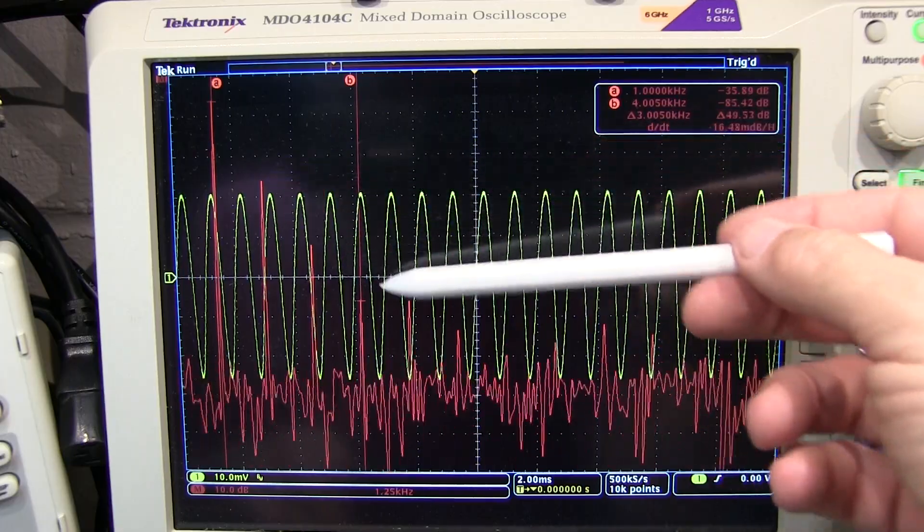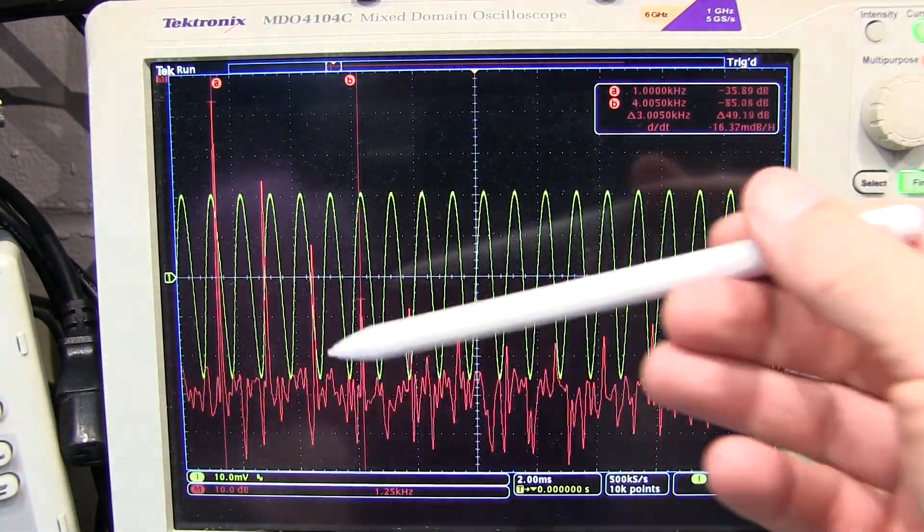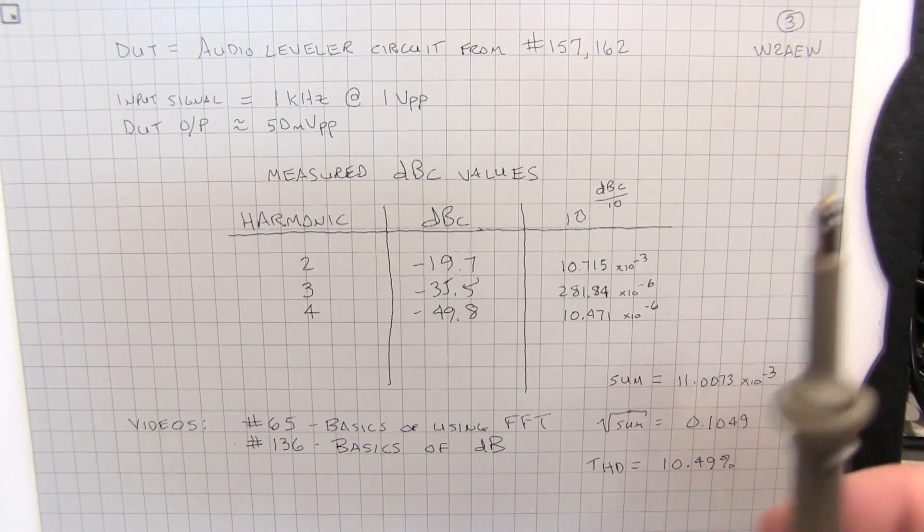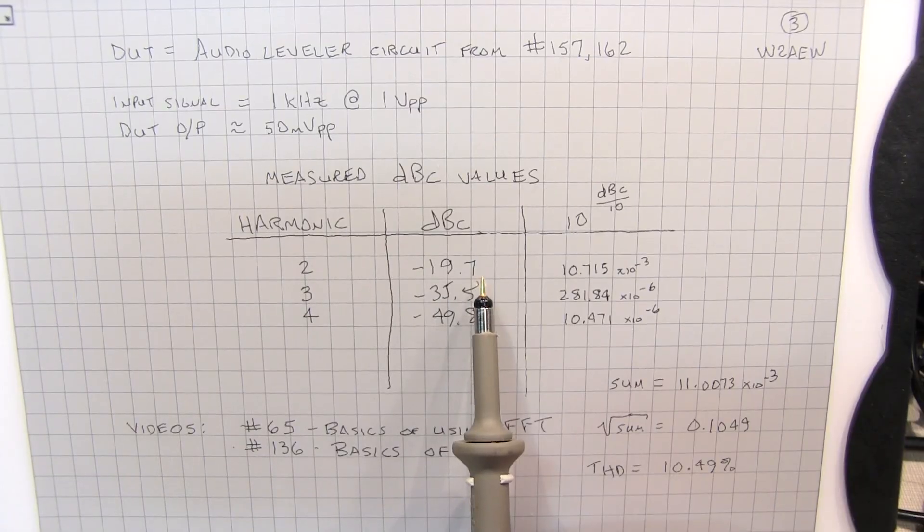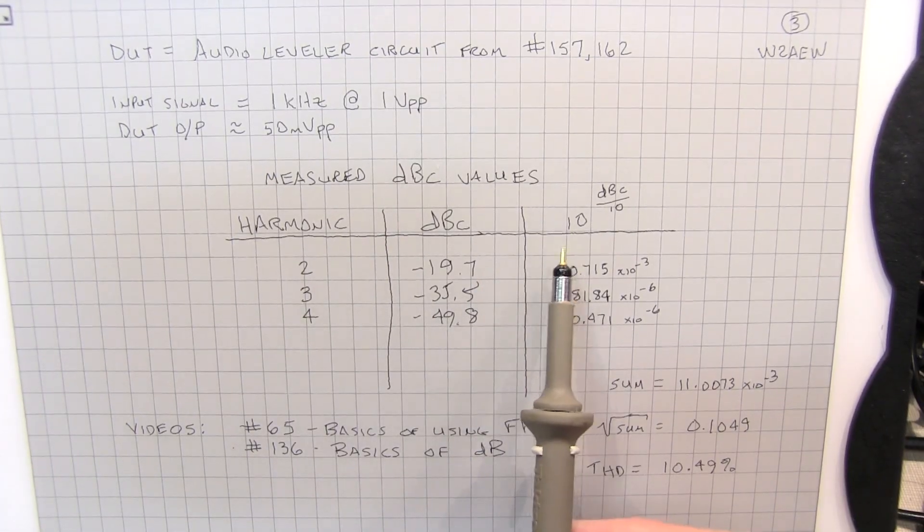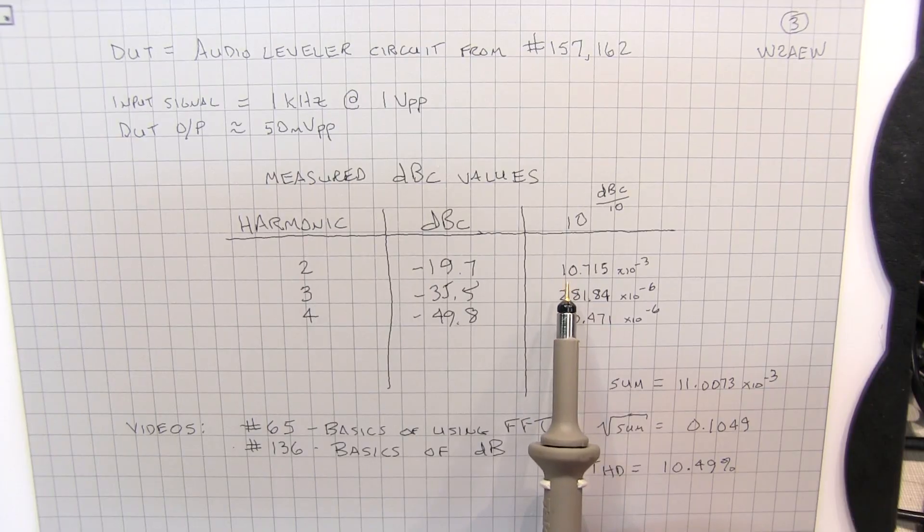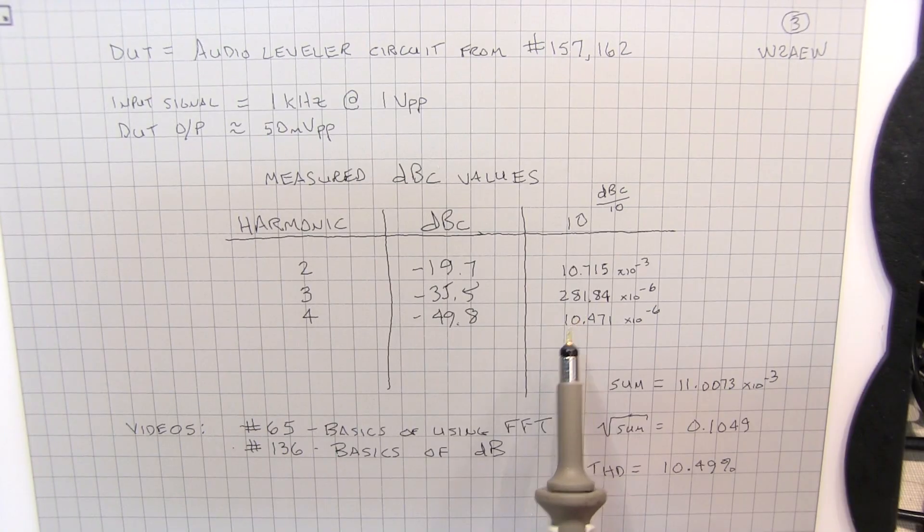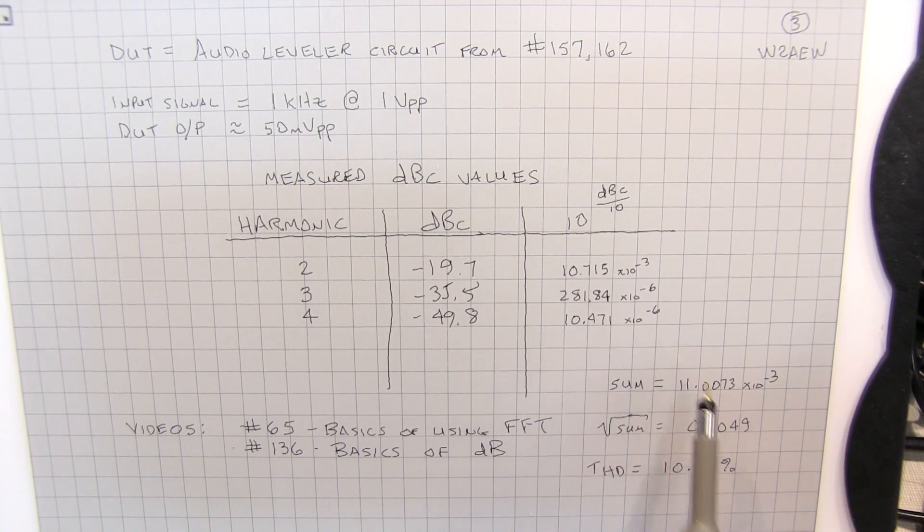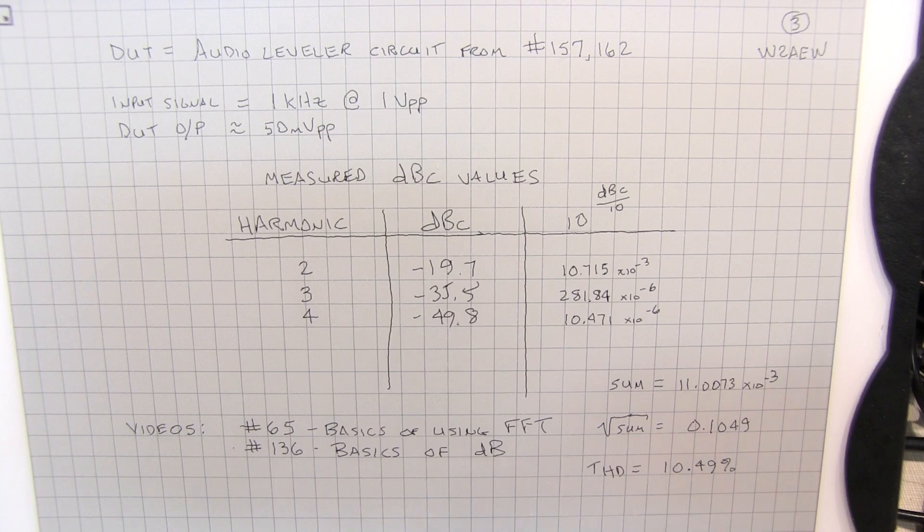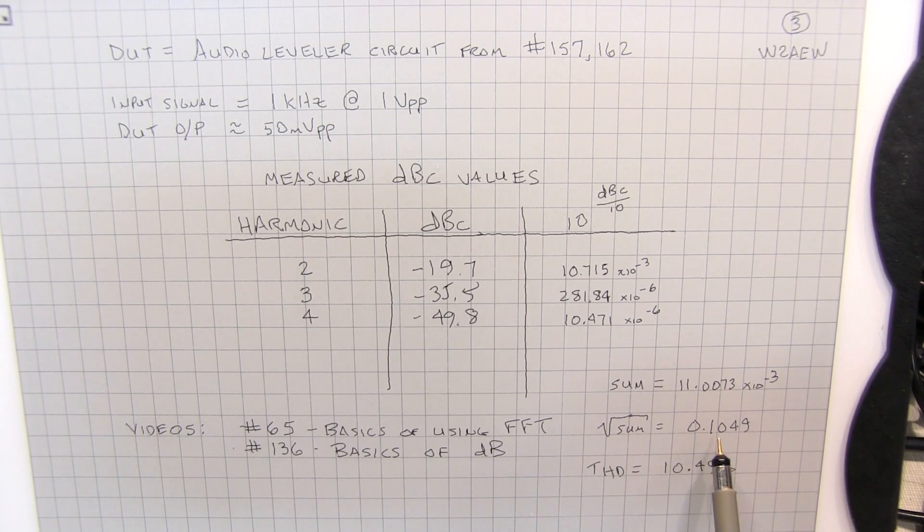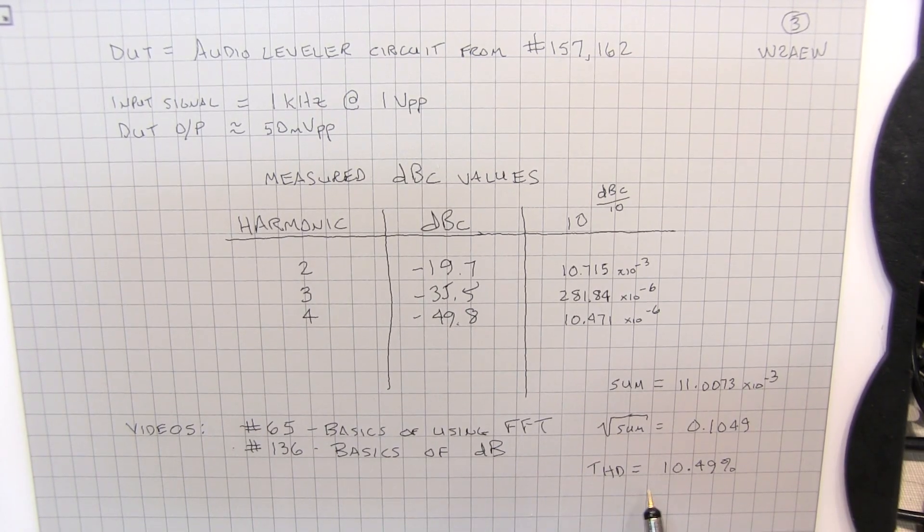So it really isn't going to contribute much to THD. Once you get components that are more than 30 dB down, they're really going to kind of be in the noise. So let's take a look at the math here. Now we've got minus 19.7 dBc. And we take 10 raised to that dBc value divided by 10. And we get 10.715 times 10 to the minus 3. Compute the other ones here as well. Take the sum of those results. And we have 11.0073 times 10 to the minus 3. Take the square root of that. And we have 0.1049 multiplied by 100%. And we get a THD value of 10.49%.